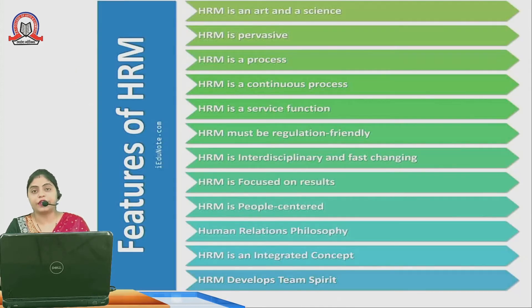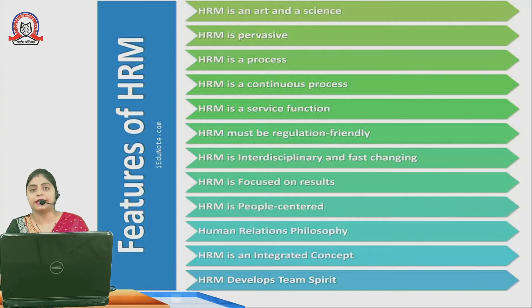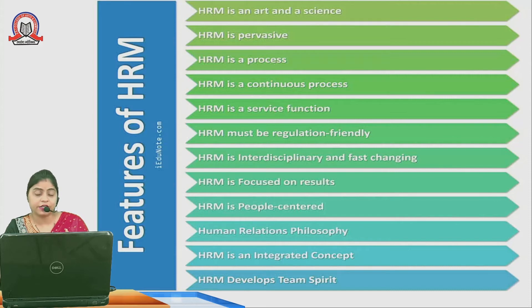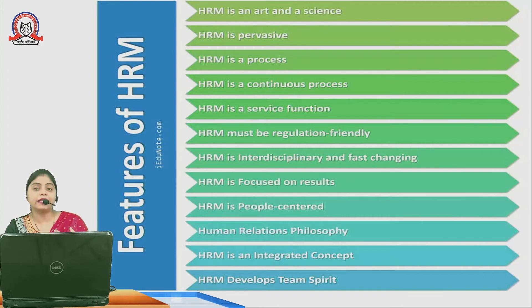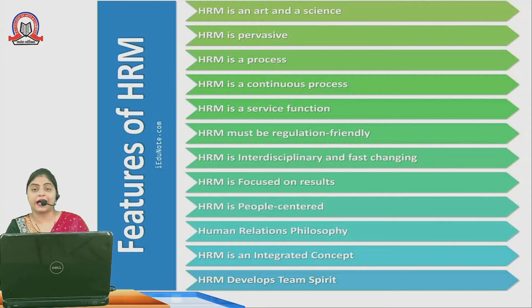Now let's look at the features or characteristics of human resource management. Number one: HRM is an art and science. HRM is an art because people should be innovative and creative at the workplace — they should always come up with new ideas and new concepts so that the company can easily achieve their goals. And it is a science because it is a process, it is a system.